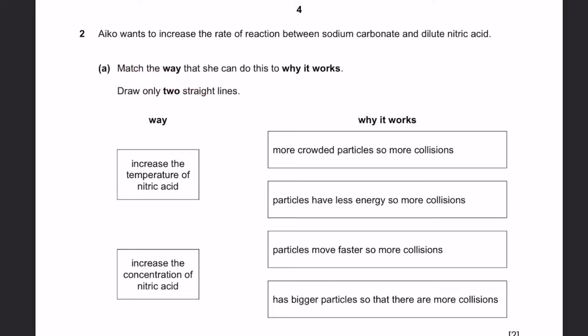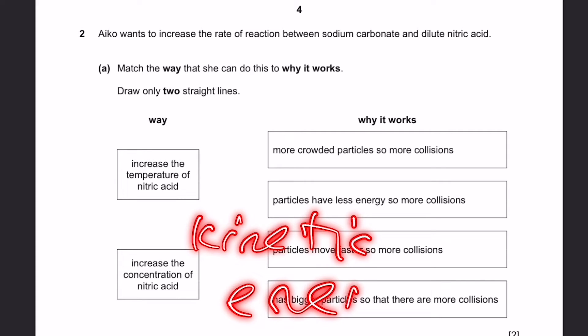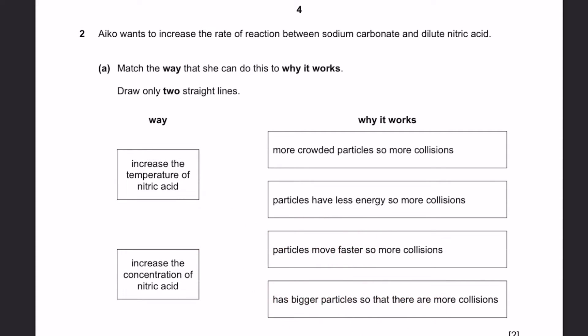Way: Increase the temperature of the nitric acid. Over here: More crowded particles, so more collisions - no. Particles have less energy, so more collisions - these two are completely opposite, so that's also wrong. Particles move faster, so more collisions. If we increase the temperature, particles gain more kinetic energy, which means that they move faster. Therefore, this is actually correct. And you can match this.